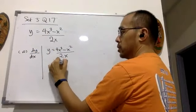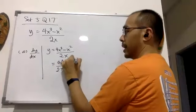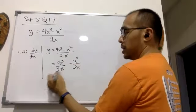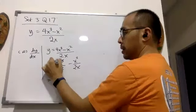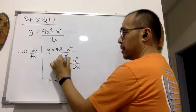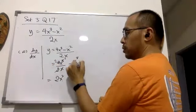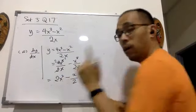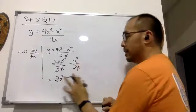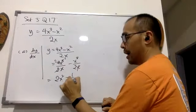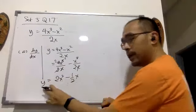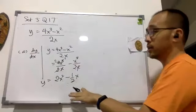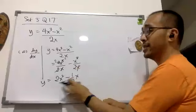y = (4x³ − x²) / 2x. If I split it up, it will be (4x³/2x) minus (x²/2x). Simplifying, I get 2x² minus x/2, or to make it easier, minus half x. This is still y — we haven't differentiated yet, we've only simplified it.